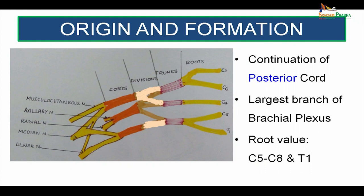Brachial Plexus is actually a group of nerves from the ventral rami of the spinal cord of the lower four cervical nerves, namely C5, C6, C7, and C8, and the upper or the first thoracic nerve, that is T1. All of these join together in various combinations and form the upper, middle, and lower trunks — that is C5 and C6 join to form the upper trunk, C7 continues as the middle trunk, and C8 and T1 join to form the lower trunk.